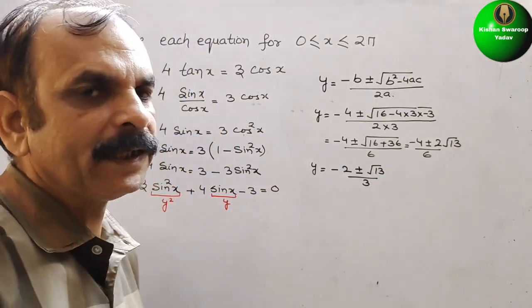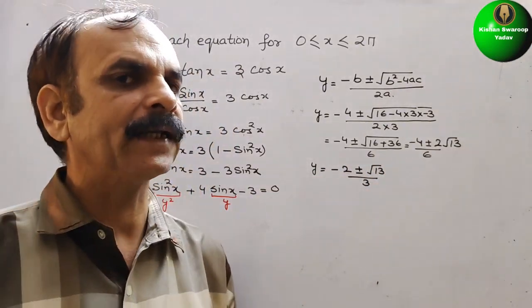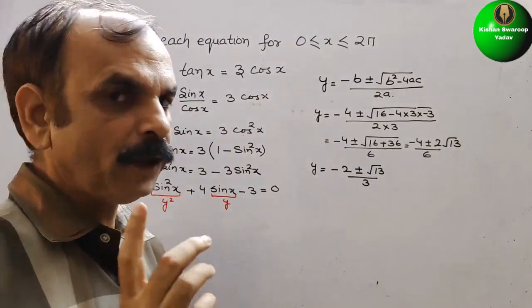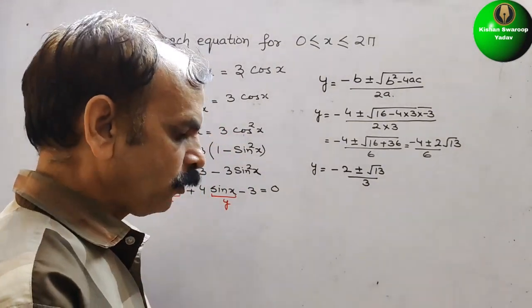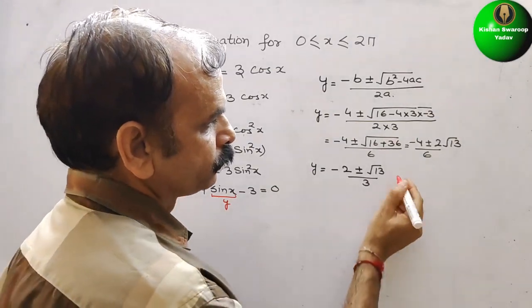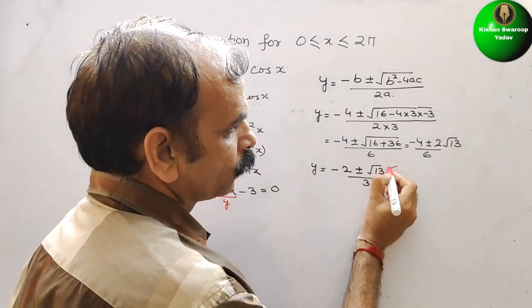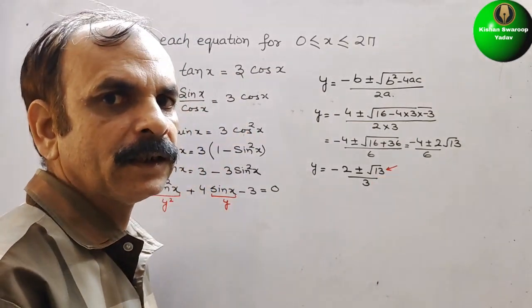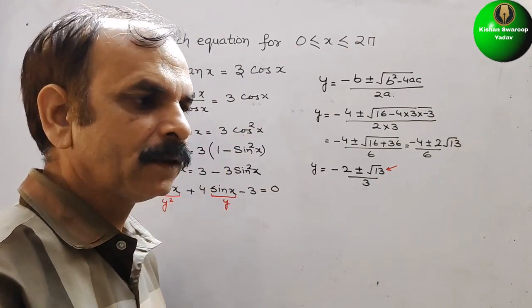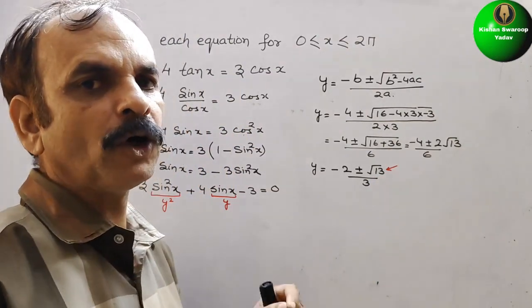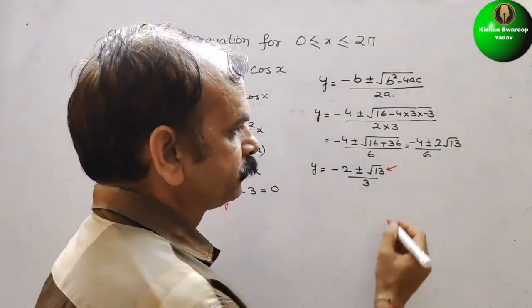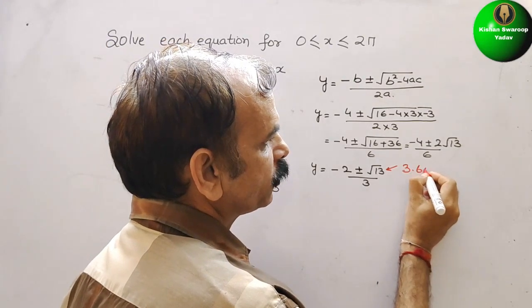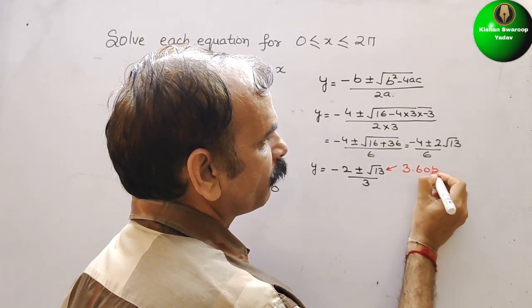So here one time we will take plus, another time we will take minus. We know the value of √13, which is nothing but 3.6055.